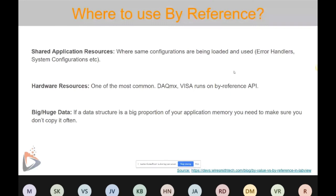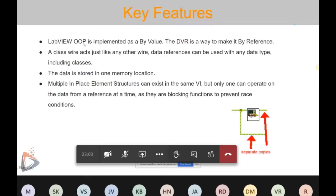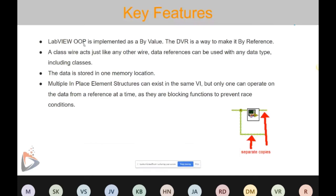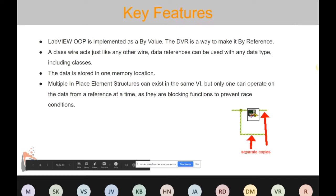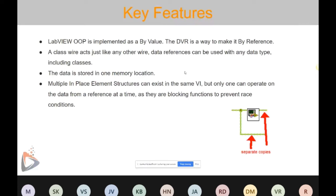Using a DVR you can make a class object pass by reference. Instead of passing it by value — which creates a separate copy every time you pass a wire — you create a DVR, put that class object in it, and pass the reference. Since the data is in the same memory location, you also achieve memory optimization.